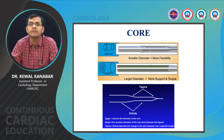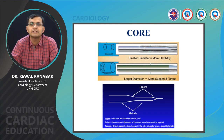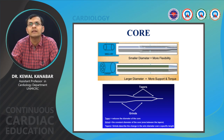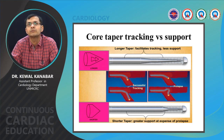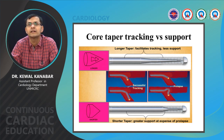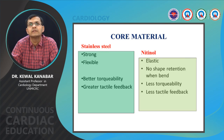A smaller diameter core gives a more flexible guide wire; a larger diameter core provides higher tracking and support. The taper is where the diameter of the guide wire reduces, and the grind is the part where the diameter remains the same — the part between the tapers. A longer taper provides better tracking but less support. A shorter taper provides greater support.